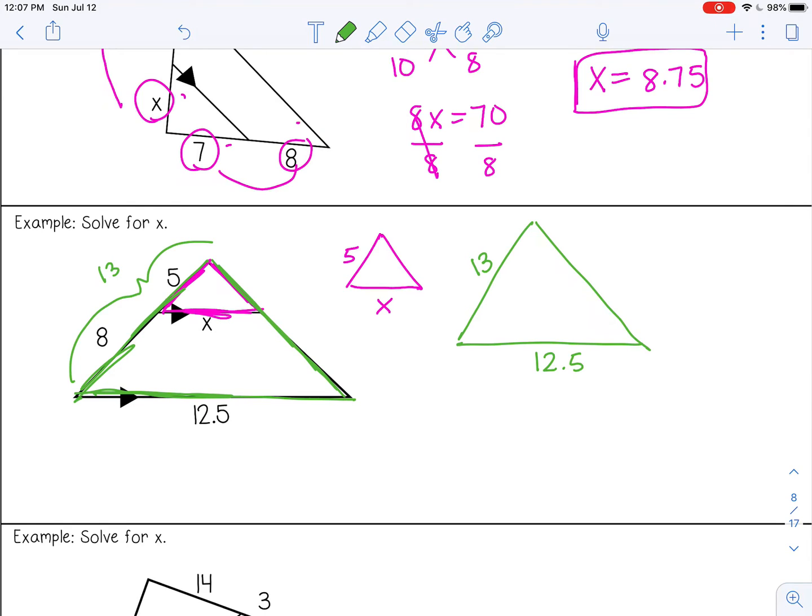Once you have them drawn separately, it's pretty easy to see how to set up the proportion. I'm going to start with x and that would match with 12.5, and then 5 over 13. Then I'm going to cross multiply here. 62.5, and then divide by 13 on both sides. So that gives me, I'm going to round to the tenths place, 4.8.